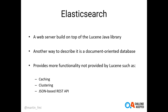You can think of Elasticsearch as a web server built on top of the Lucene Java Library. You can use Lucene directly in your applications; however, it lacks a number of capabilities like clustering, additional advanced caching, and an easy way to query stored data. For that reason, Elasticsearch builds a web server on top of the Apache Lucene Library to provide all of those missing capabilities.